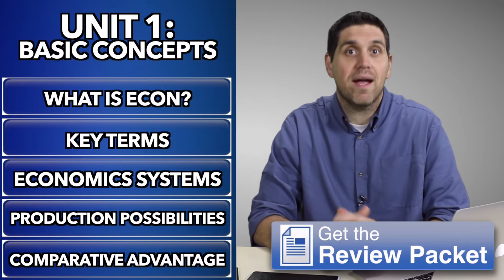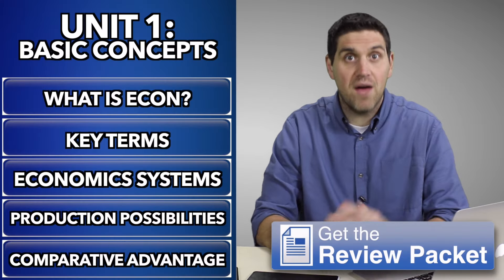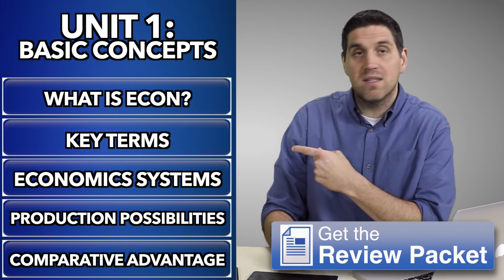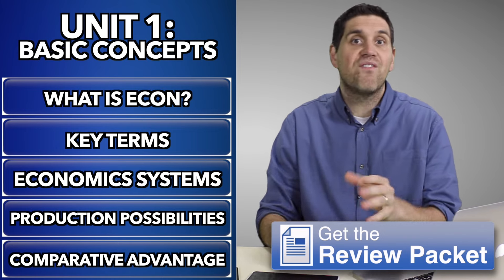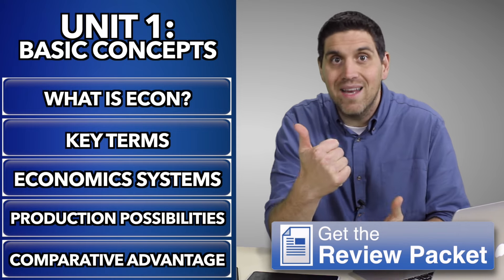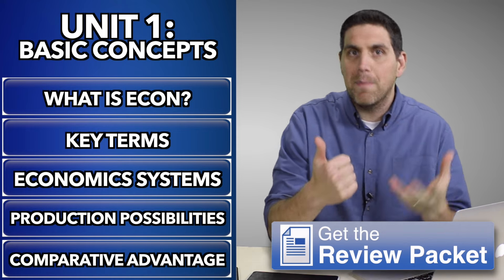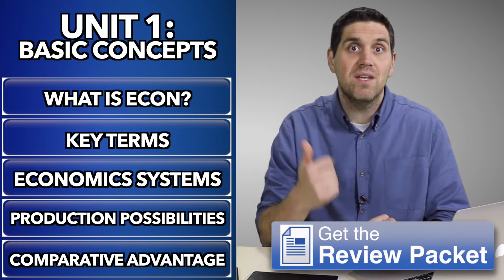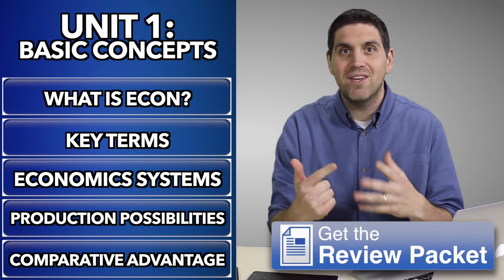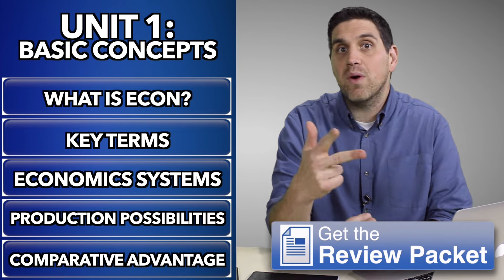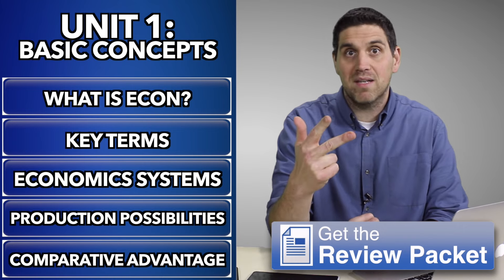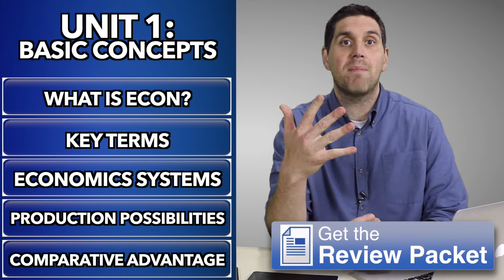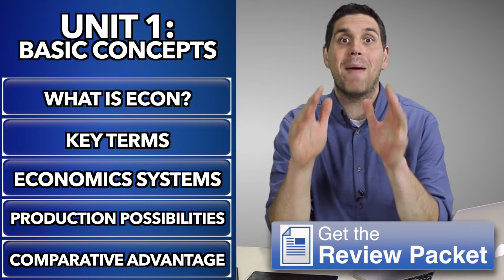Now we're going to jump into Unit 1, Basic Economic Concepts. We're going to cover five different concepts. We're going to look at what is economics and talk about scarcity and opportunity costs and trade-offs. Then we're going to jump into key terms, then economic systems, then the production possibilities curve, and finally comparative advantage.